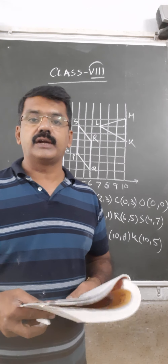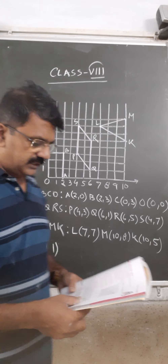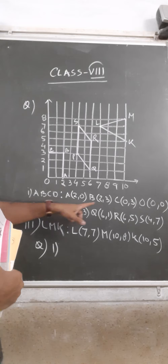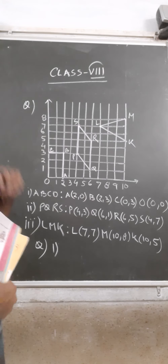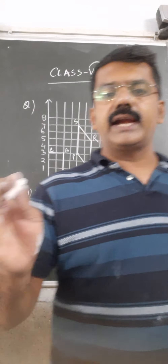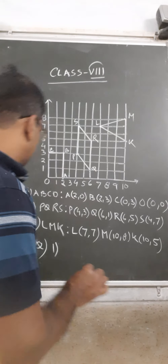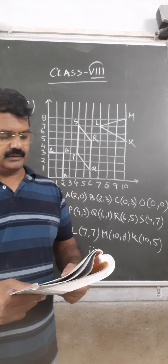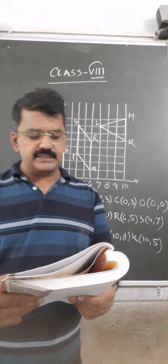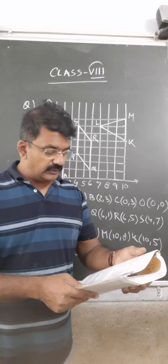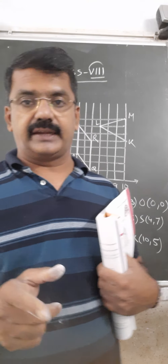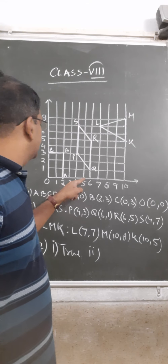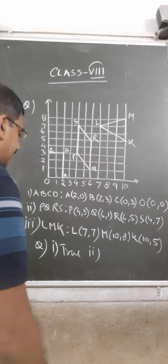Now there are a few true and false questions. The first part: a point whose x-coordinate is 0 and y-coordinate is non-zero will lie on the y-axis. This is TRUE — if the x-coordinate is 0 and y-coordinate is non-zero, it lies on the y-axis. The second part: a point whose y-coordinate is 0 and x-coordinate is 5 will lie on the y-axis. This is FALSE — that point is (5, 0) and it lies on the x-axis, not the y-axis.